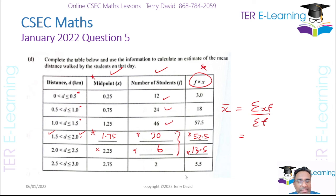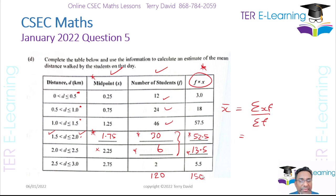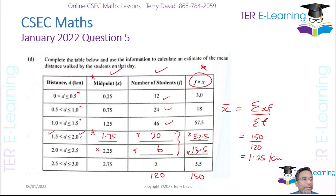Adding up the frequencies gives 120, as expected. Adding up the fx column: 3.0 + 18 + 57.5 + 52.5 + 13.5 + 5.5 = 150. Therefore the mean is 150 divided by 120, which gives 1.25 kilometers. So the mean distance is 1.25 km. That brings us to the end of question 5 — if you like the video, please subscribe to my channel and hit like. Thanks guys.